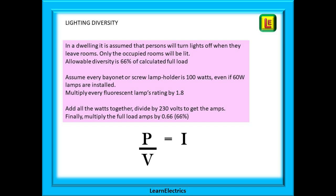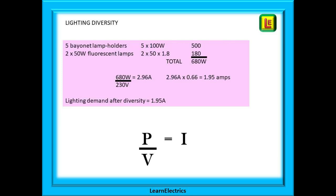Then add them all together to get a grand total in watts. Divide it by 230 volts to find the maximum amps, and then multiply this amps number by 0.66 to give you the demand with diversity applied. In our lighting example, we have five bayonet type light fittings, so assume 100 watts each, that's 500 watts, and we have two fluorescent lamps at 50 watts each. Two fifties are 100, multiplied by 1.8, which gives us 180 watts. The total then is 680 watts. Divide this by 230 volts, and we have a full load current of 2.96 amps. Now applying diversity, we multiply 2.96 by 0.66, and we have a new figure of 1.95 amps for that lighting circuit.